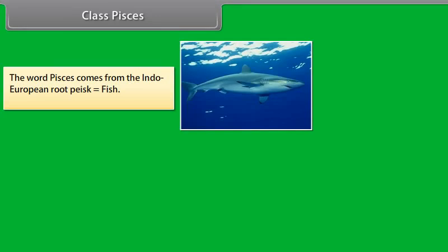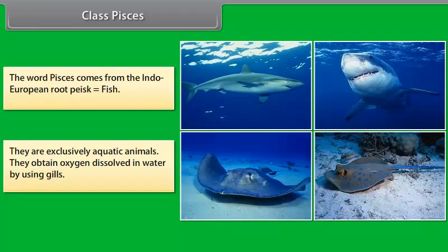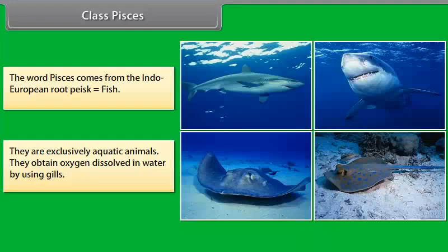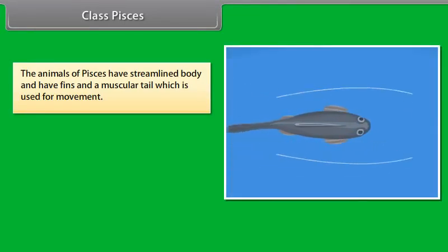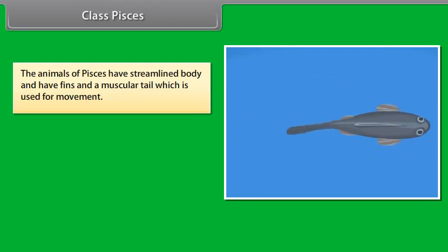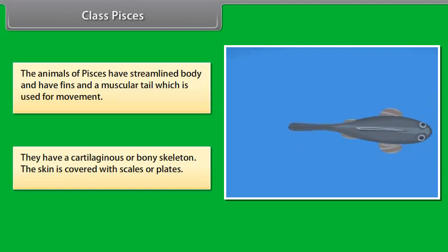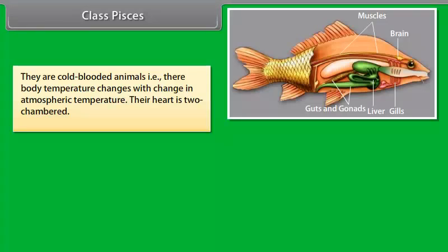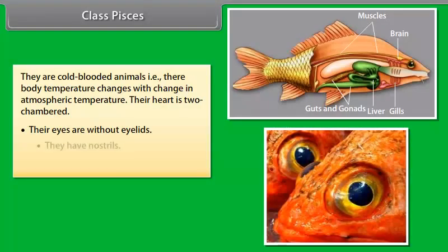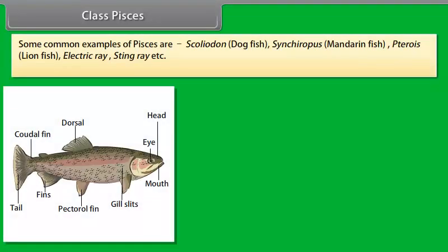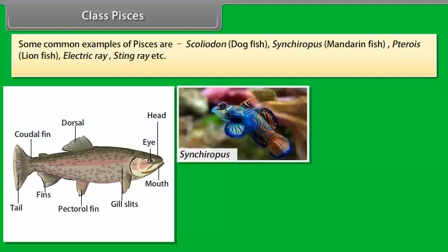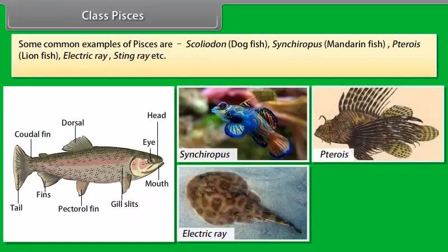Class Pisces. The word Pisces comes from the Indo-European root 'pesk' meaning fish. They are exclusively aquatic animals. They obtain oxygen dissolved in water by using gills. The animals of Pisces have a streamlined body with fins and a muscular tail used for movement. They have a cartilaginous or bony skeleton. Their skin is covered with scales or plates. They are cold-blooded animals, meaning their body temperature changes with the atmospheric temperature. Their heart is two-chambered. Their eyes are without eyelids. They have nostrils and lay eggs. Common examples are Scoliodon (Dogfish), Cinquefoil, Mandarinfish, Pterois (Lionfish), Electric Ray, and Stingray.